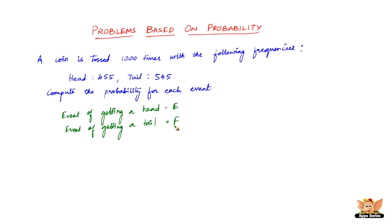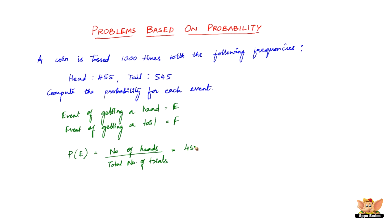The number of times E happens, that is the number of times a head comes up, is 455. So the probability of E is the number of heads divided by the total number of trials. That is 455 divided by 1000, which is 0.455. So the probability of event E is 0.455.